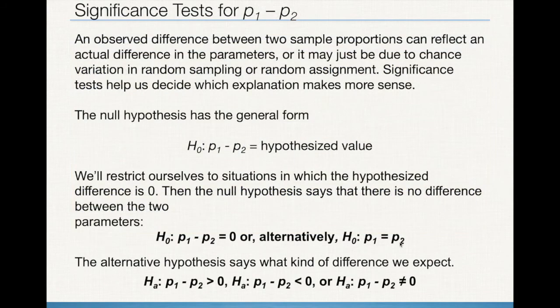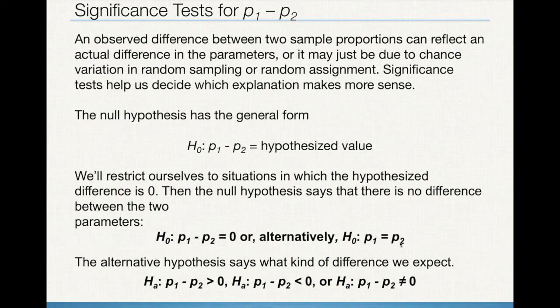What about significance testing? Significance testing is a little different because we need some information about the population parameters. Whenever we're comparing two populations, the null hypothesis is always going to be that there is no difference. I've written this two ways: p1 minus p2 equals 0, or p1 equals p2. I find the first method easier to understand when interpreting which side of the distribution I'm on, because I know which one I've considered to be the first number and which the second.